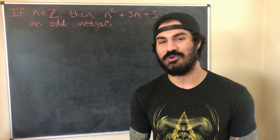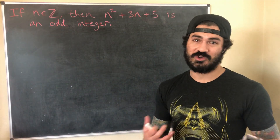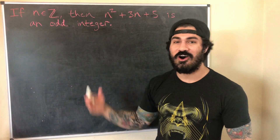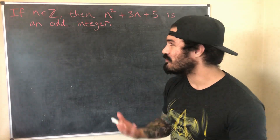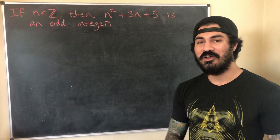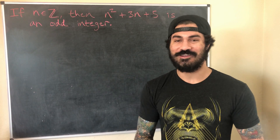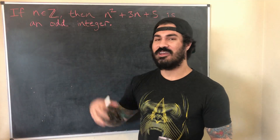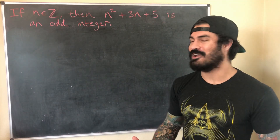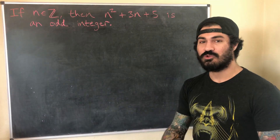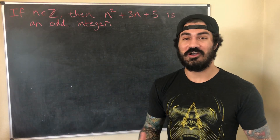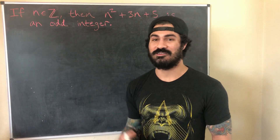Let's jump right into the first example. The proposition we're going to prove is: if n is an integer, then the expression n² + 3n + 5 is an odd integer. We could try to prove this directly by assuming n is an integer and showing the expression is odd, but the problem — and I encourage you to try it — is that the assumption that n is an integer doesn't give us anything we can use. What we want to show is that this expression equals 2 times an integer plus 1, and it's really hard to do just by assuming n is an integer.